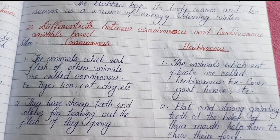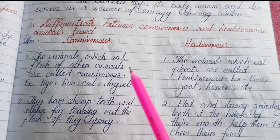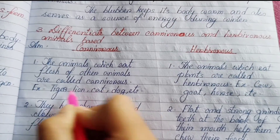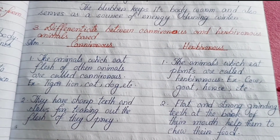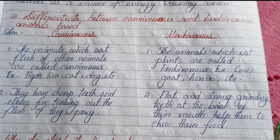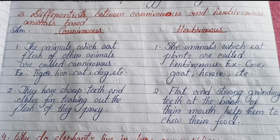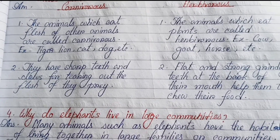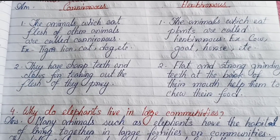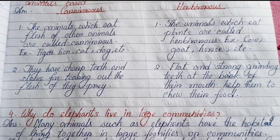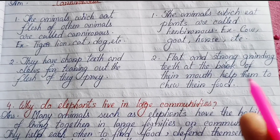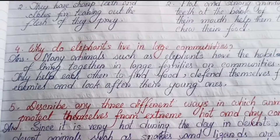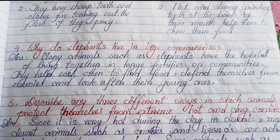Number three — Differentiate between carnivores and herbivores animals. Carnivores: animals which eat the flesh of other animals are called carnivores; examples are tiger, lion, cat, dog. They have sharp teeth and claws for tearing out the flesh of their prey. Herbivores: animals which eat plants are called herbivores; examples are cow, goat, horse. They have flat and strong grinding teeth at the back of their mouth to chew their food.